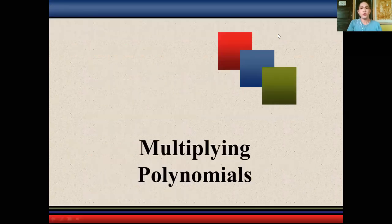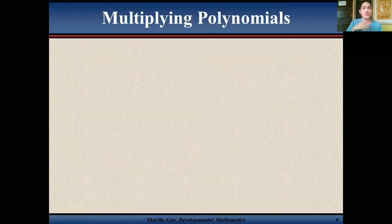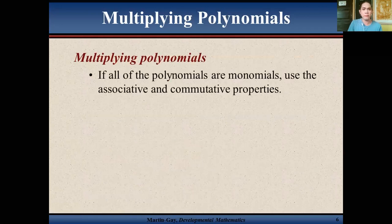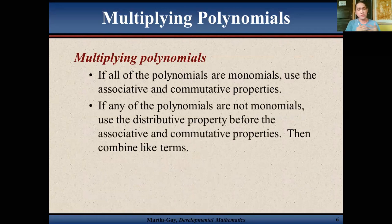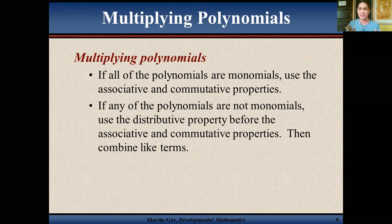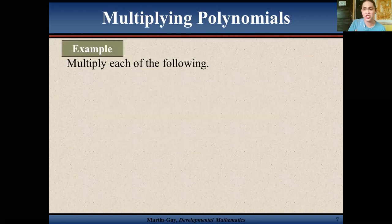Now we will go over the operation of multiplying polynomials. Always remember: if all of the polynomials are monomials, use the associative and commutative properties. If any of the polynomials are not monomials, use the distributive property before the associative and commutative properties of multiplication, then combine all like terms. Let's have an example to appreciate the steps.